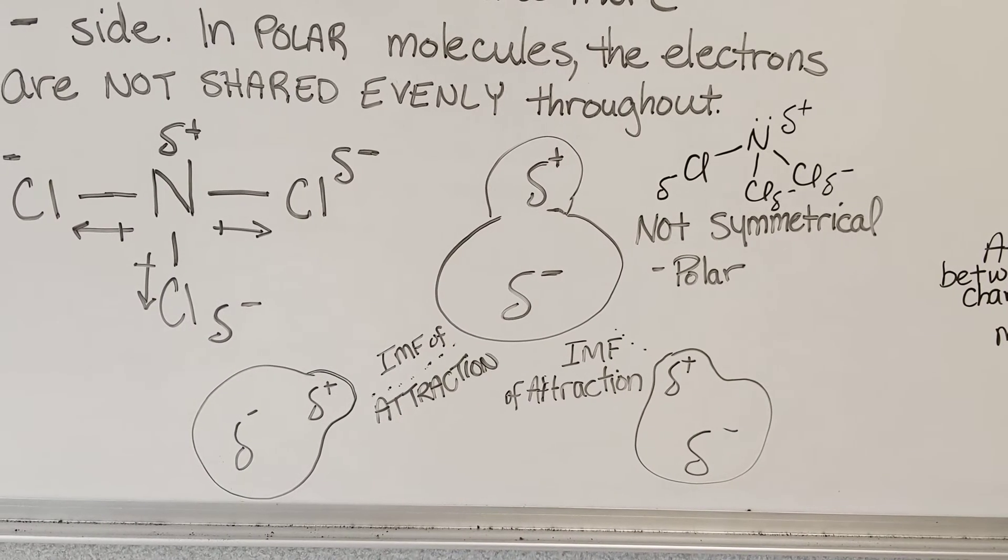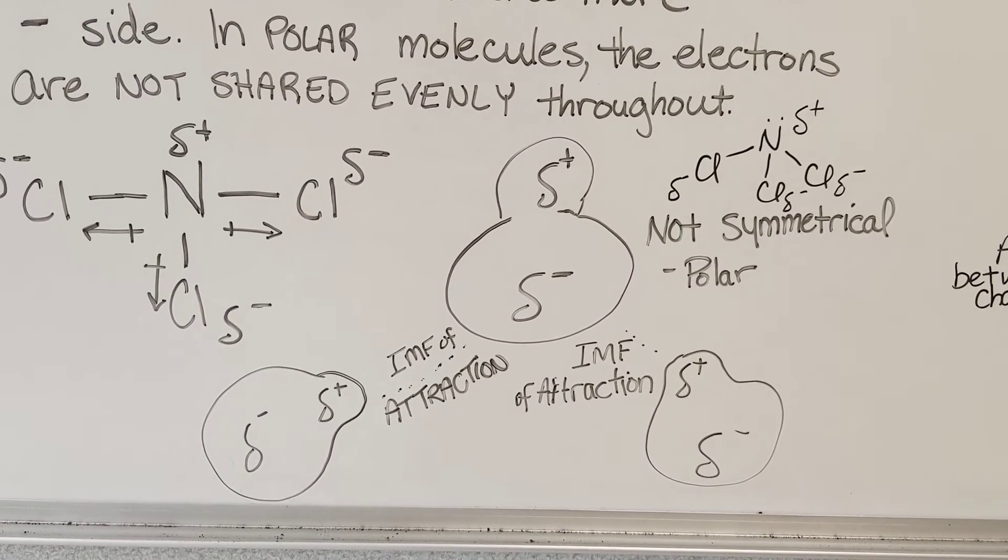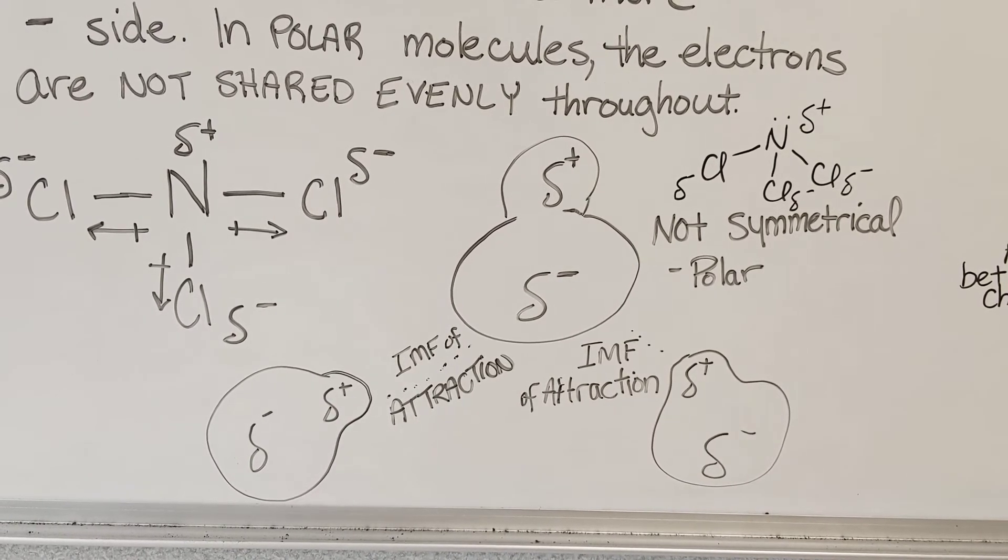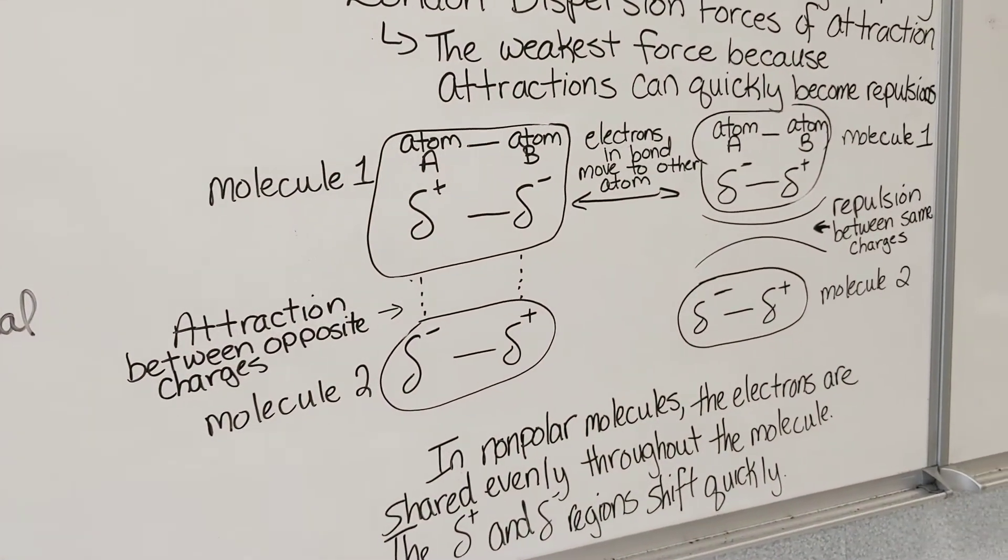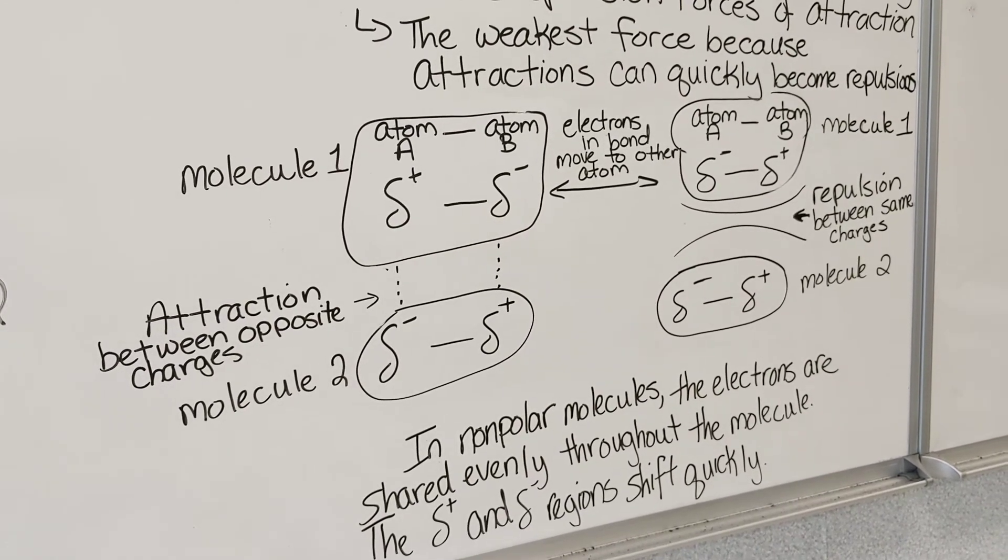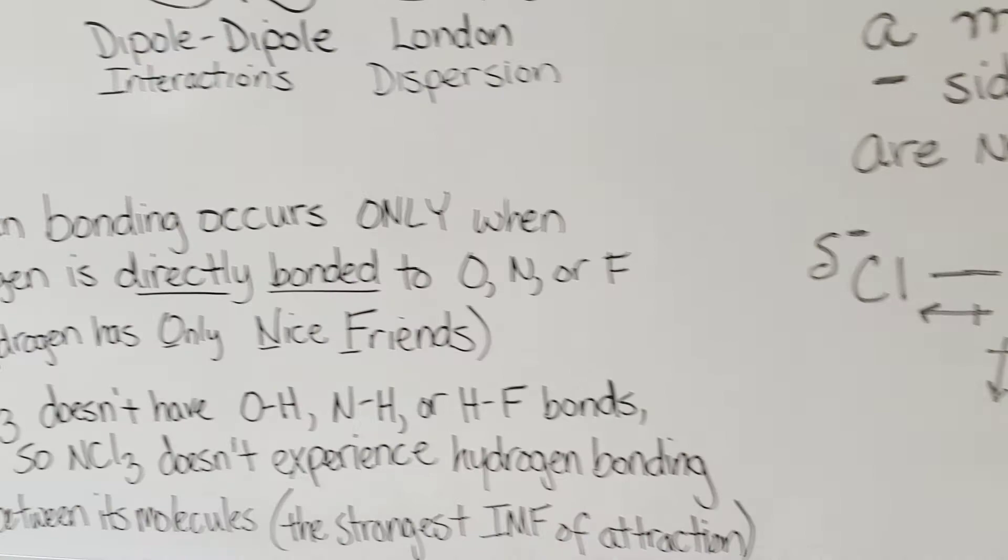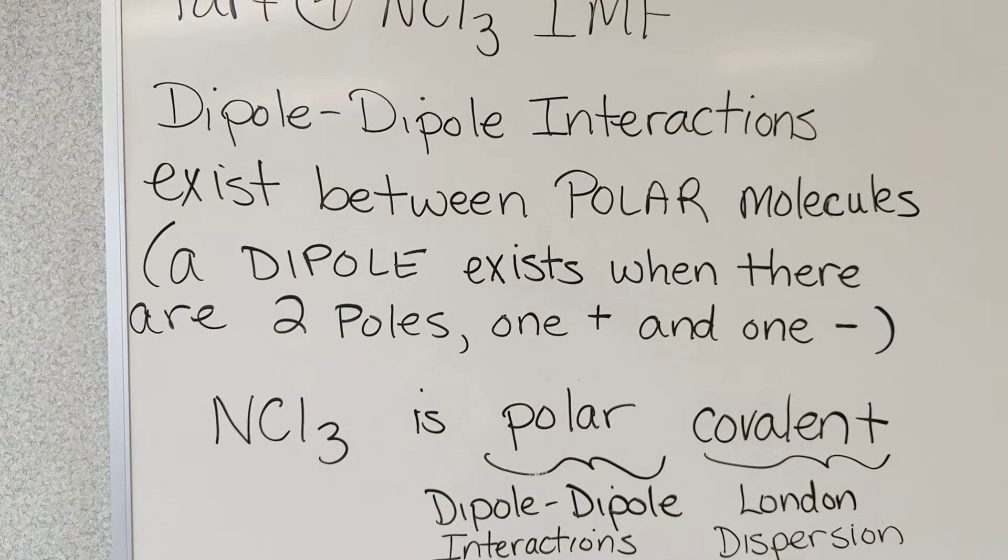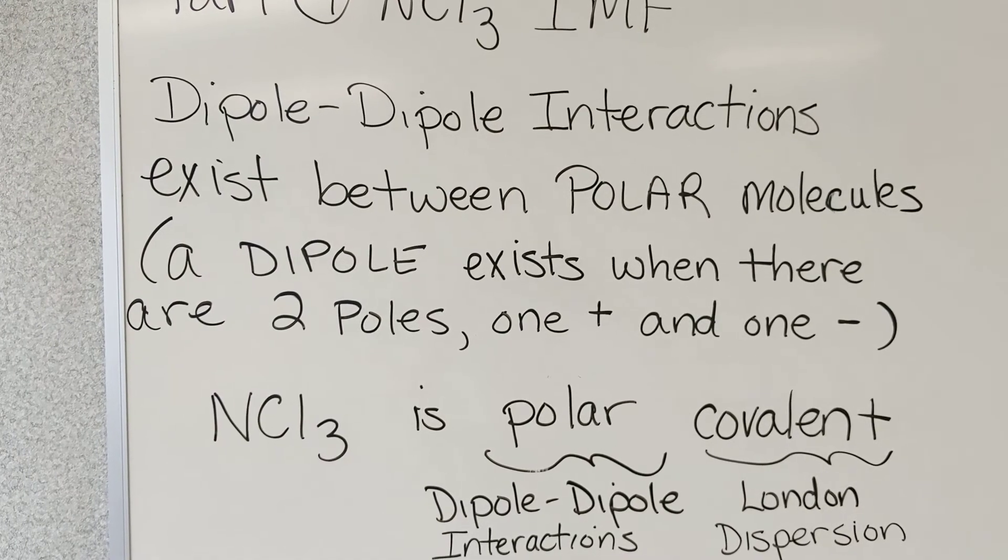This is a longer-lasting attraction because the electrons will hang out longer at chlorine's nucleus than they will at nitrogen's nucleus. It's not as momentary as seen here with the nonpolar molecules and nonpolar bonds switching back and forth more quickly. What this leads to is a different force of attraction, a different name. It's known as a dipole-dipole interaction. Those exist between polar molecules. A dipole exists when there are two poles, one positive side and one negative side.